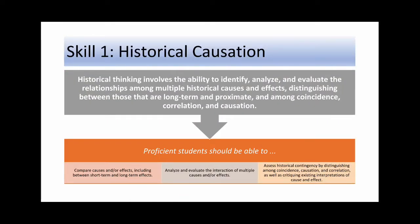Skill number one is historical causation. Historical thinking involves the ability to identify, analyze, and evaluate the relationships among multiple historical causes and effects, distinguishing between those that are long-term and proximate, and among coincidence, correlation, and causation. You basically have to be able to identify cause and effect of different historical events.